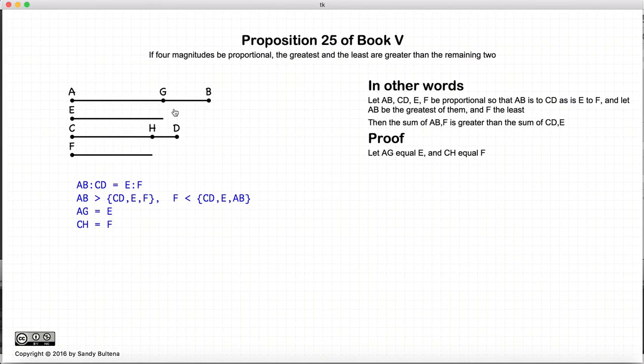The first thing that we're going to do is since AB is greater than E, we're going to construct a line segment AG such that it equals E. Similarly, since F is smaller than CD, we are going to construct a line segment CH that is equal to F.